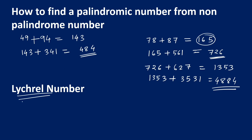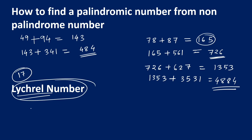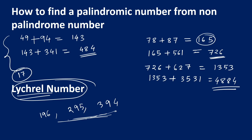An important note: if you take a number whose digit sum is 17, you may need to repeat this iterative addition process up to 24 steps before reaching a palindrome. Now, what are Lychrel numbers? If a number never becomes a palindrome through repeated reverse-and-add steps, it is called a Lychrel number. Examples include 196, 295, and 394. Mathematicians are still working on these.